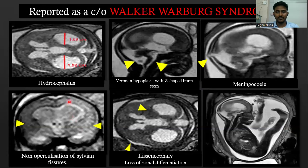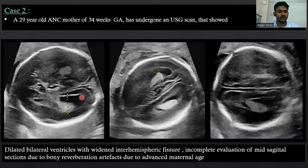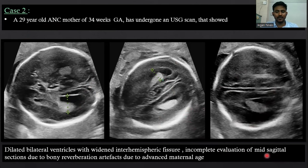We reported this as a case of Walker-Warburg syndrome. Case two: a 20-year-old antenatal mother with 34 weeks of gestation. USG showed dilated lateral ventricles bilaterally with widened interhemispheric fissure. Evaluation was incomplete due to non-availability of a mid-sagittal section, which was due to bone reverberation artifacts from increased maturity at 34 weeks.